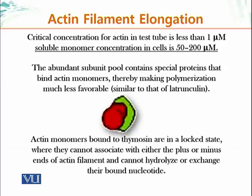The type of protein that binds these monomers is called thymosin. Thymosin binds actin monomers — similar to latrunculin — putting them in a locked state. The conformation is such that they cannot add on to existing plus ends. So when actin is unable to add on to existing plus ends, the filaments will not elongate.